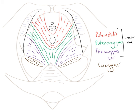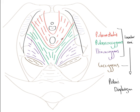If we add levator ani and coccygeus together, we form the pelvic diaphragm. So remember: this sheet of muscle lining the inferior aspect of the pelvis — the pelvic diaphragm — consists of puborectalis, pubococcygeus, and iliococcygeus, which is levator ani, plus coccygeus.